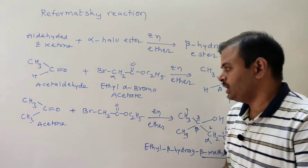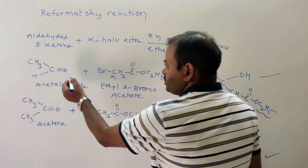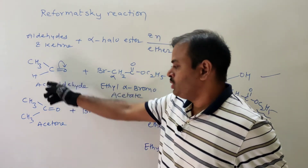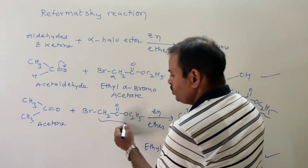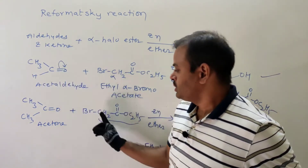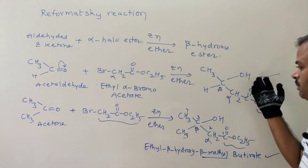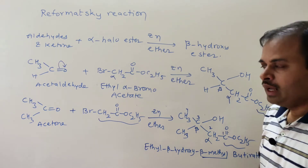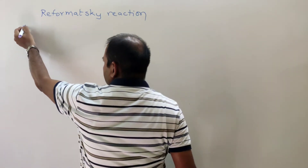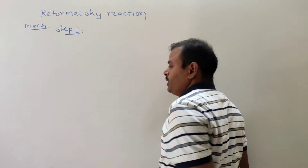This is about the Reformatsky reaction products. How are they formed? We can explain this with the mechanism. The carbonyl C=O group, due to the electronegativity of oxygen, gives the oxygen a negative charge and the carbon a positive charge. The mechanism completes in three steps. Step one is the formation of organozinc bromide.